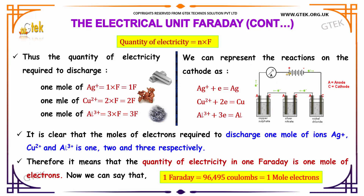We can represent the reactions at the cathode as: for silver, Ag⁺ + e⁻ → Ag; for copper, Cu²⁺ + 2e⁻ → Cu; and for aluminum, Al³⁺ + 3e⁻ → Al. It is clear that the moles of electrons required to discharge one mole of ions of Ag⁺, Cu²⁺, and Al³⁺ are 1, 2, and 3 respectively.